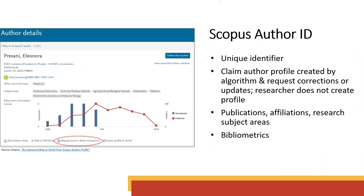Scopus author ID. Scopus is another citation index database like Web of Science, and it also offers a unique identifier — not a persistent identifier — for researchers. Like Web of Science, an algorithm generates author profiles, including name, variations on names, institutional affiliation, research subject areas, and publications already indexed in Scopus. Author ID pages include bibliometrics like citation count and H-index. But unlike Web of Science, you can't register and set up a profile yourself. Rather, you can request corrections, additions, or deletions to your existing profile, and request a merge of profiles if the algorithm has created multiples for you — so the researcher has less control here. You can import information from a Scopus author ID into ORCID, but Scopus and ORCID don't automatically sync.